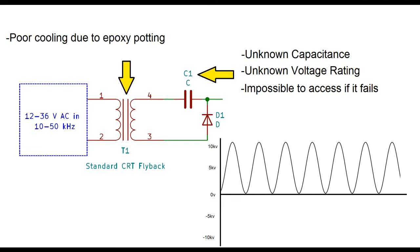The potting also causes problems cooling the transformer, and the transformer core is tiny, so it doesn't take much to saturate it, meaning there's a limit on the power that it can transfer. Because of all these problems, the best approach is for me to just wind my own flyback transformer from scratch.